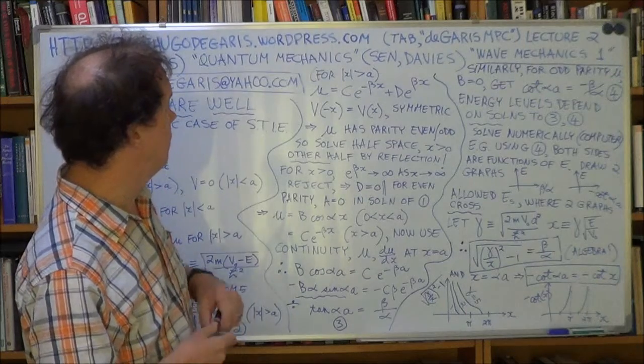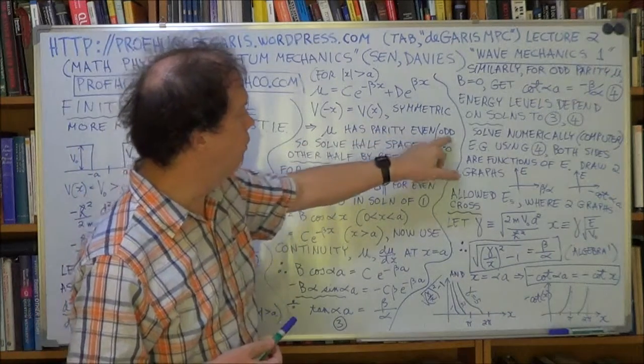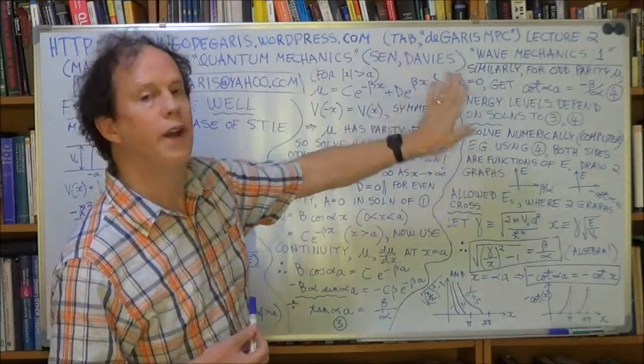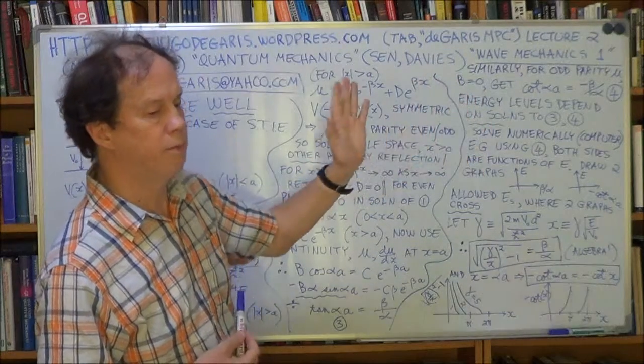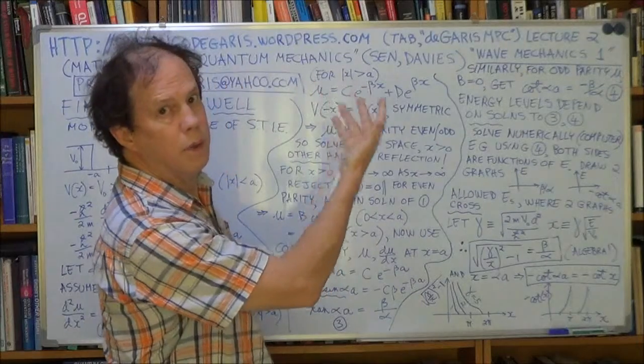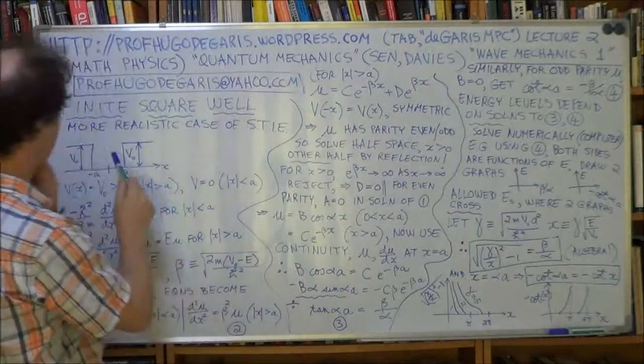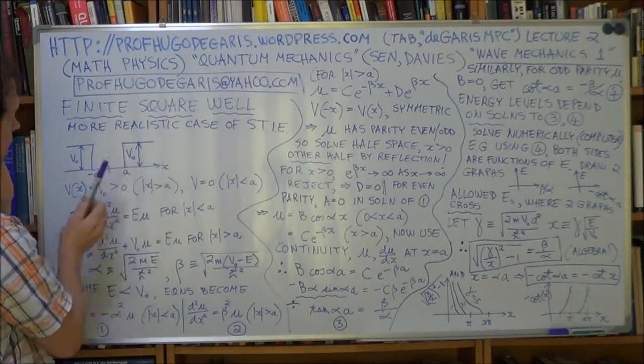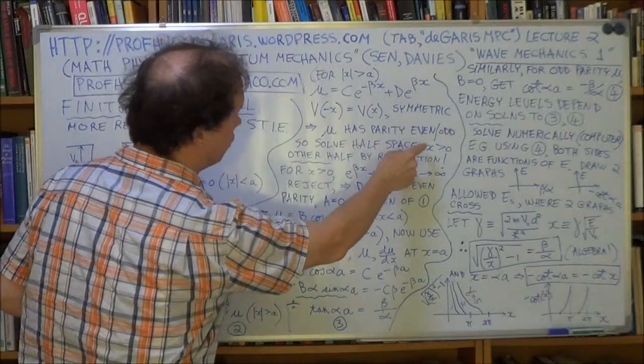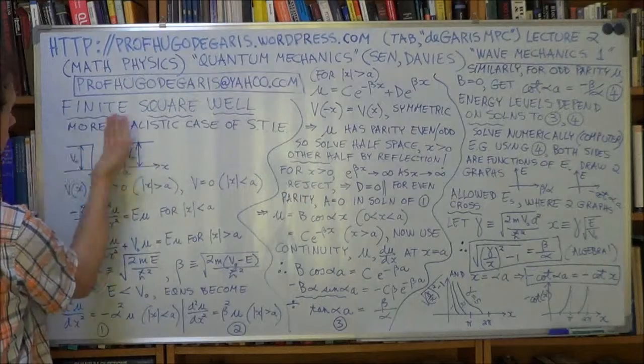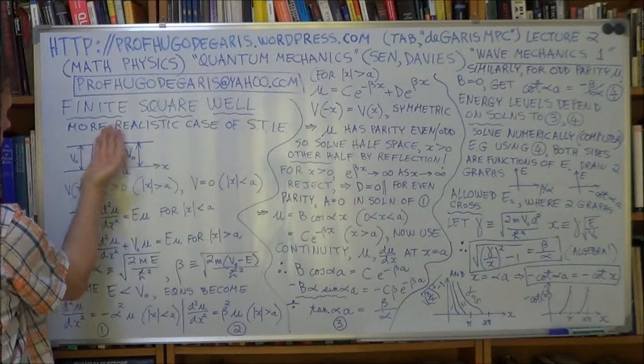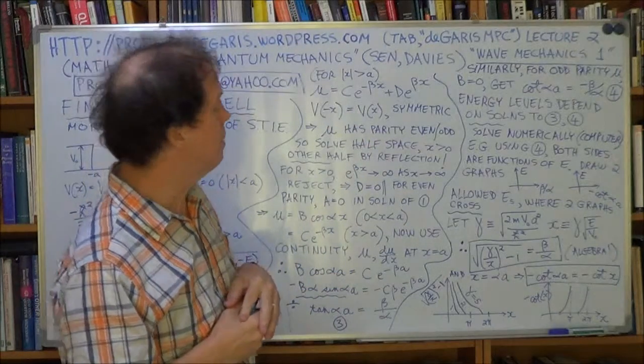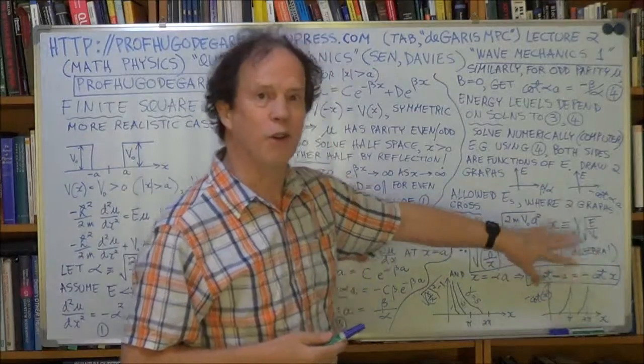So we know that U has odd or even parity. So that means we can save ourselves a lot of work by just solving one half of the problem. And once we've solved that, we know by mirror symmetry we'll get the solution to the other half of the problem. So for example, if we can solve what's going on on the right half of the problem, then by symmetry, odd or even parity, we can figure out what the wave function should be on the left half. So we can save ourselves a lot of work, which is nice. So theorems like the odd or even parity are very useful.